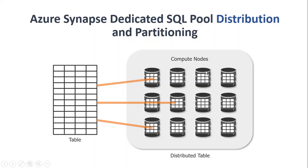The compute nodes are chosen when creating your dedicated SQL pool. Whenever you create a table, it is automatically distributed or horizontally partitioned into 60 segments. As a user, you can only pick the sharding or distribution pattern when defining the tables. The three options are hash, round robin, and replicated. If you don't specify one, round robin is the default.